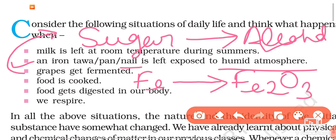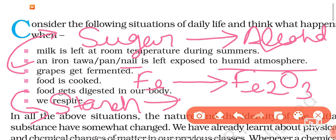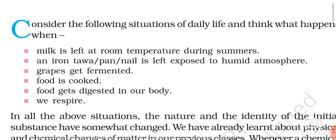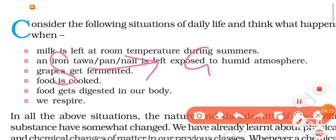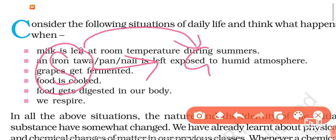Another example is food getting digested. If you eat potato, it contains starch, and after digestion the starch converts into glucose. One substance is converting into another substance — this is again an example of a chemical reaction.